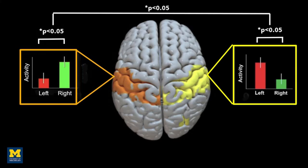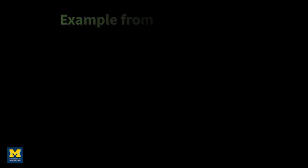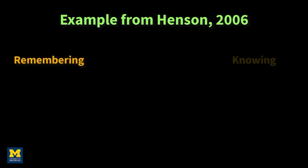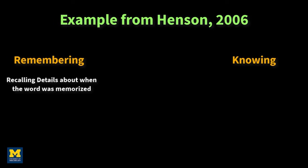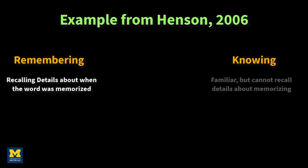A significant region-by-condition interaction provides further statistical evidence for a dissociation. For example, let's look at an fMRI study of remembering versus knowing words that were presented earlier in an experiment. Words were 'remembered' if the subject could recall details about when they saw the word. Words were 'known' if they seemed familiar but the subject couldn't recall any specific details about when they saw it.